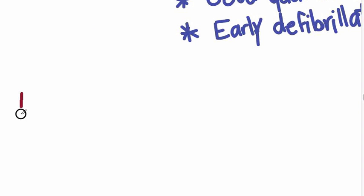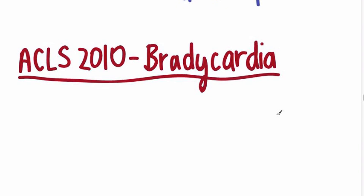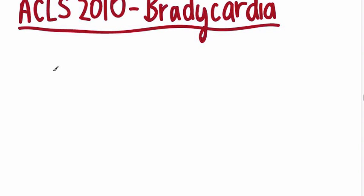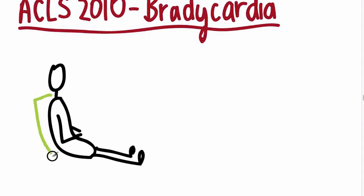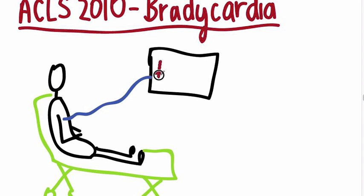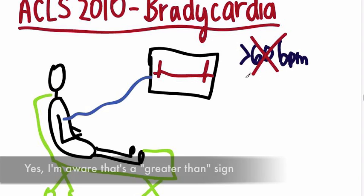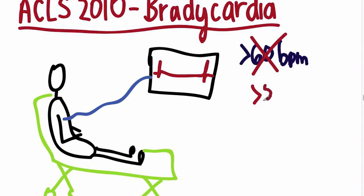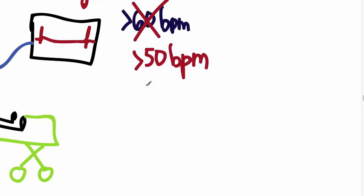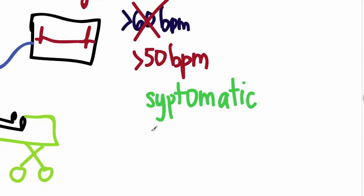So let's say you've got a patient sitting in the hospital bed hooked up to the cardiac monitor. The previous definition of bradycardia was any heart rate less than 60 beats per minute, but the new guidelines change that to 50 beats per minute. Most patients between 50 and 60 really aren't even symptomatic. We should draw the distinction between symptomatic and unstable.